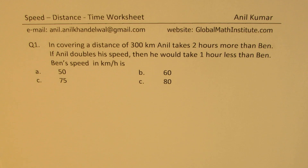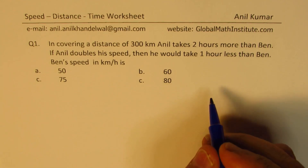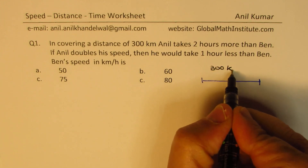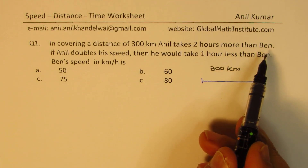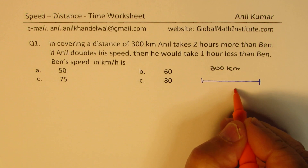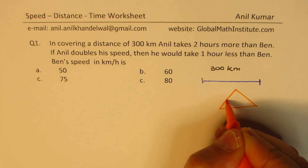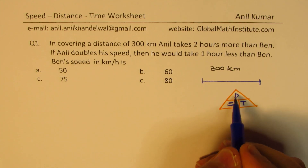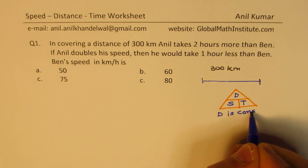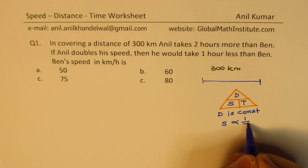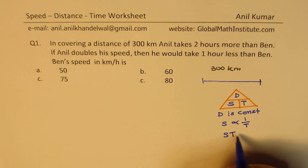We will start straight away with the strategy. In covering a distance of 300 kilometers, Anil takes two hours more than Ben. In such questions, the distance is fixed and given to us as 300 kilometers. As you know, distance equals speed times time — represented by the triangle — and if distance is constant, then speed is inversely proportional to time. That is to say, speed times time is constant.